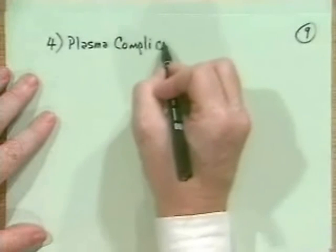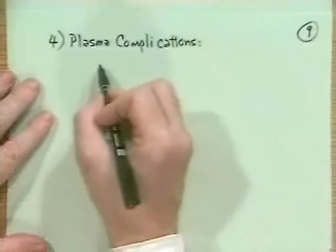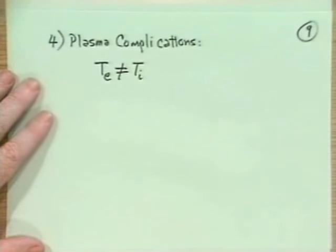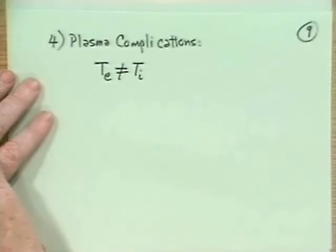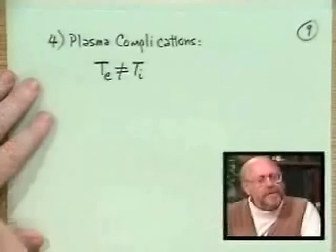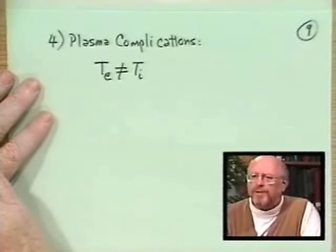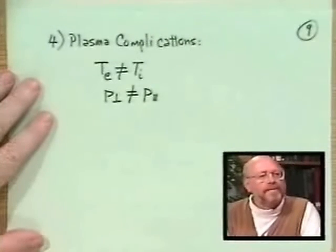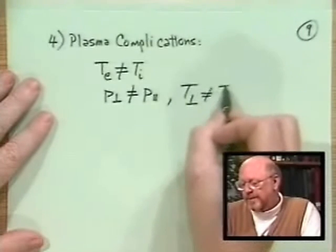Plasma complications: first, because it's relatively collisionless, the electron temperature need not equal the ion temperature. Collisions are weak in a plasma. Also, in a magnetic field with few collisions, the pressure perpendicular to B may not equal the pressure parallel to B — that is, T_⊥ ≠ T_∥.